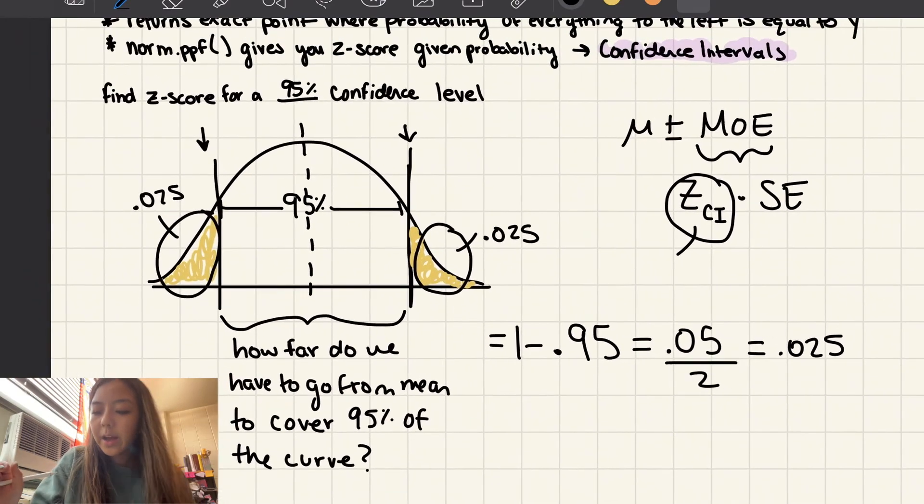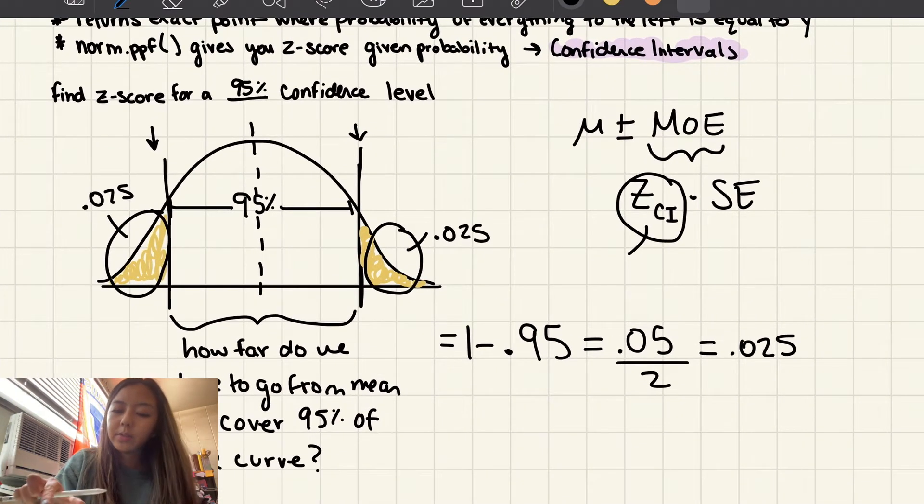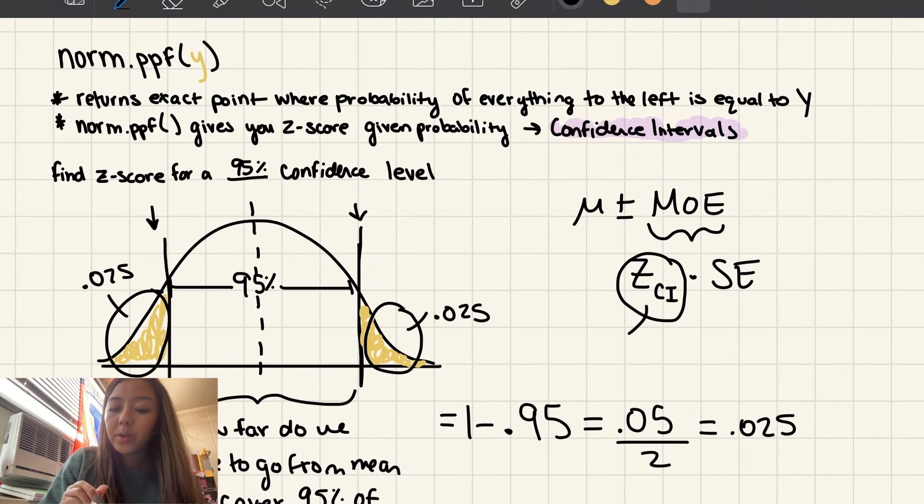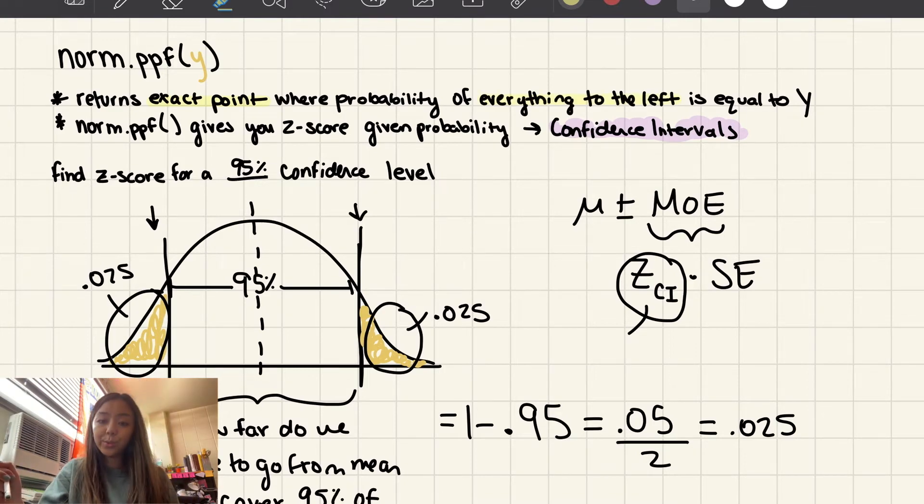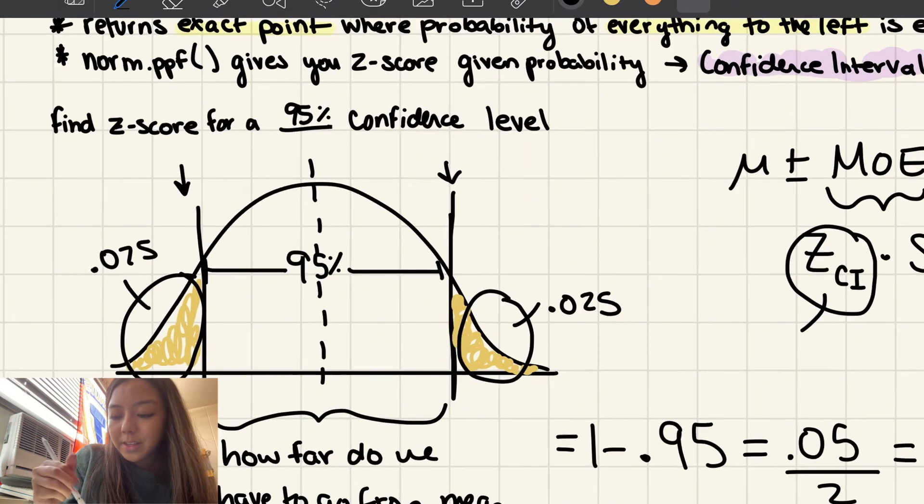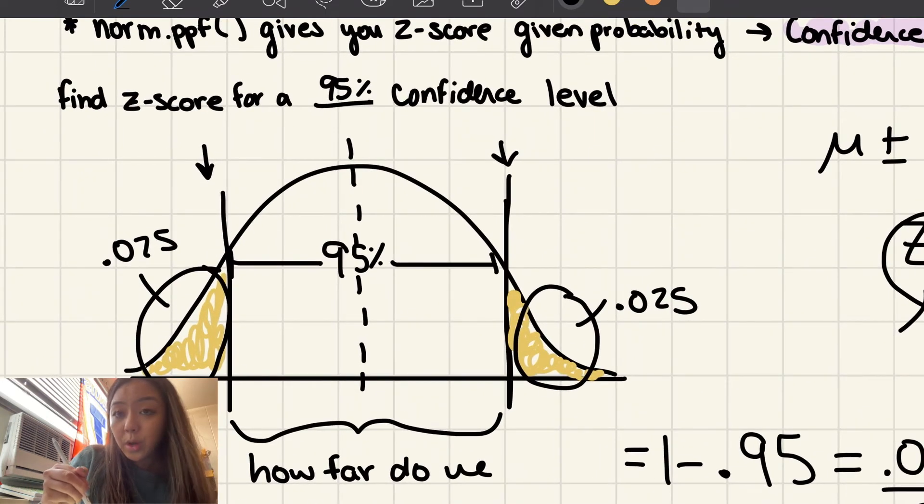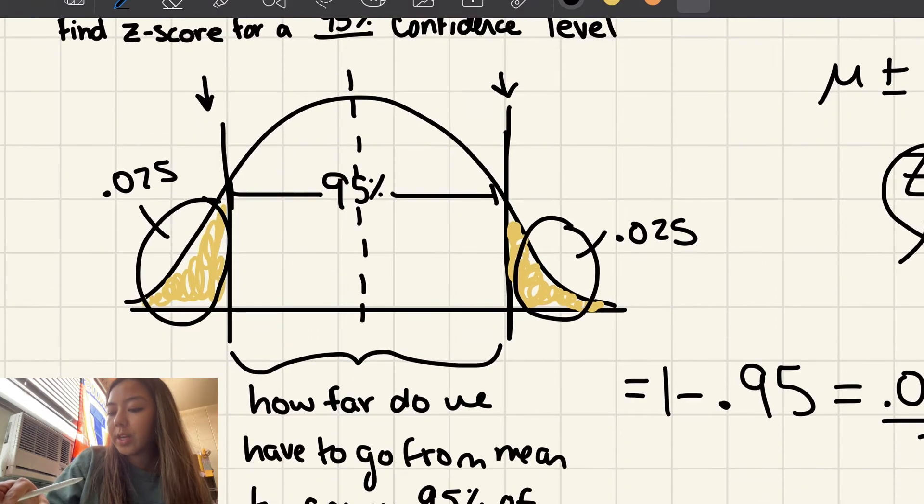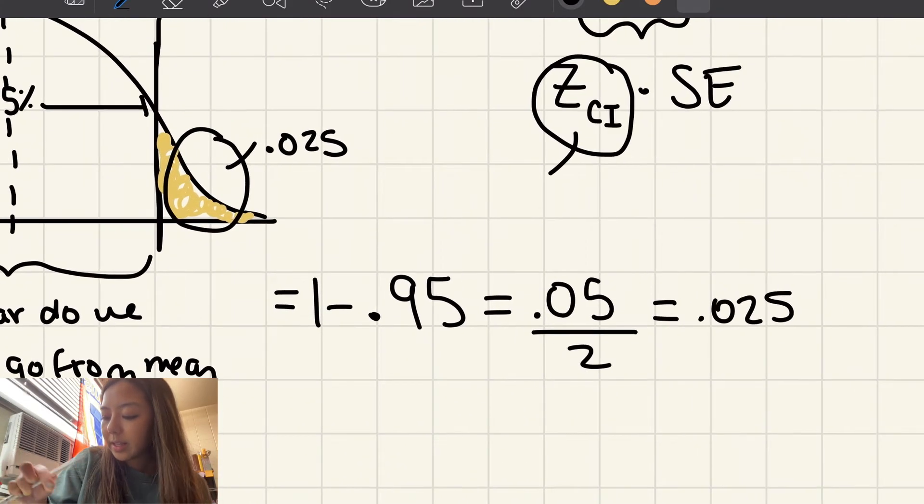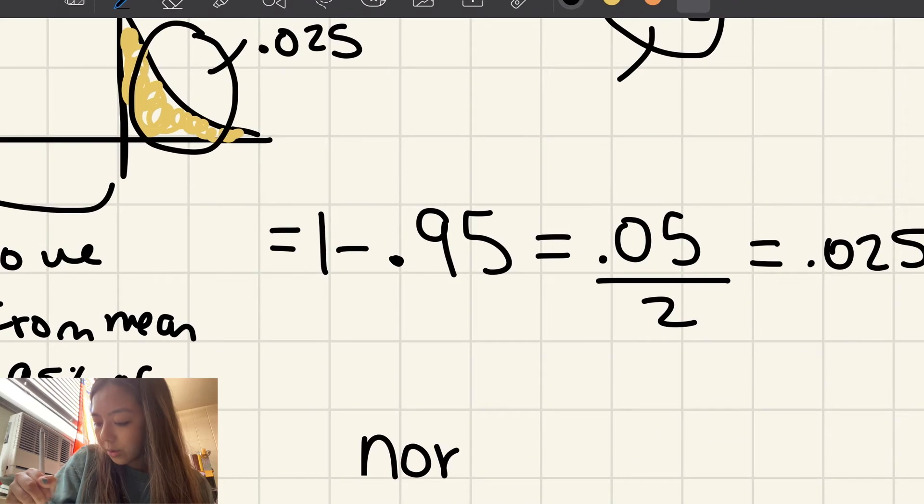So now what we can do is, remember how I said that the norm.ppf will return the exact point where the probability of everything to the left of that point is equal to y. So we can use this area because everything to the left of this is equal to 0.025. So we know the probability. So to find the z-score, we can just plug that probability into the function norm.ppf, 0.025.